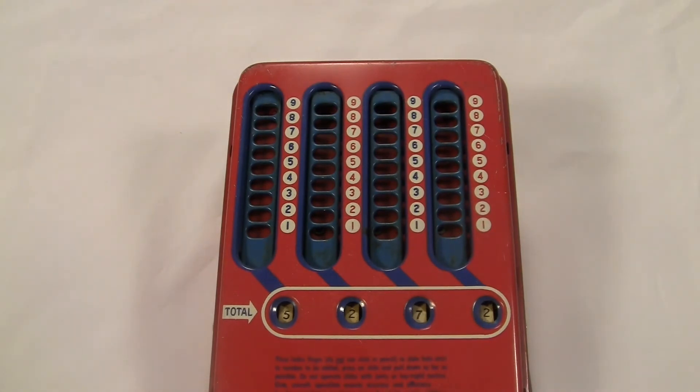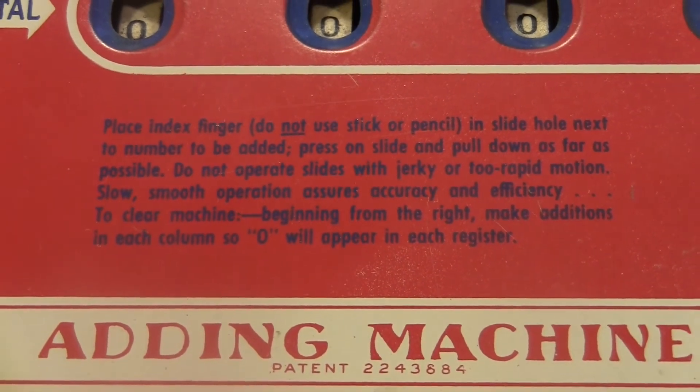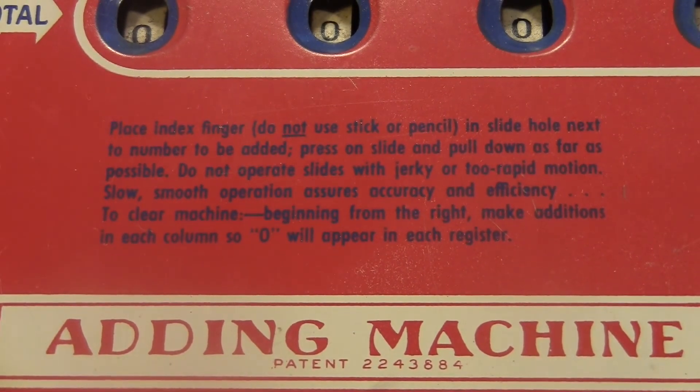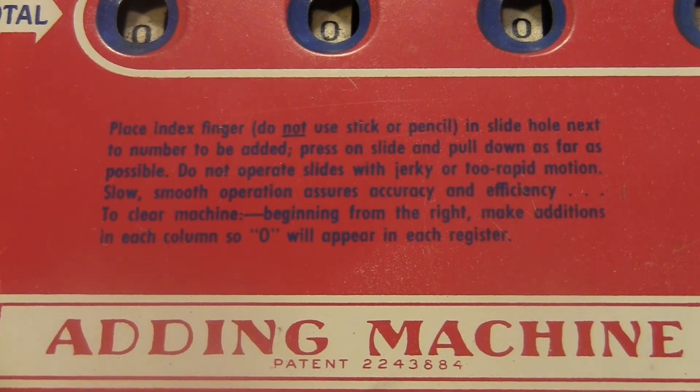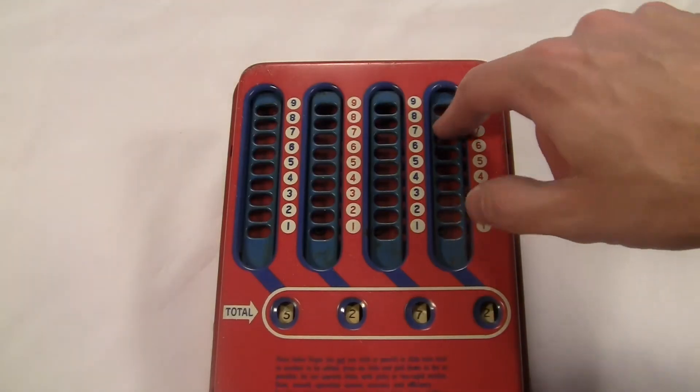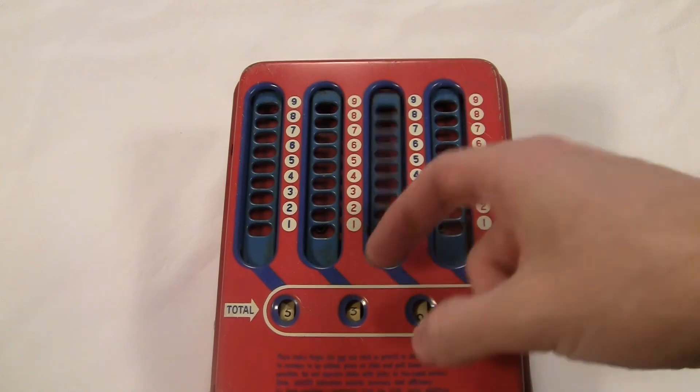Most machines have some way to clear the number back to zero. Not this one. Instructions right there say, beginning from the right, make additions in each column so zero will appear in each register. In other words, clear it yourself, kid. You've got to learn someday.